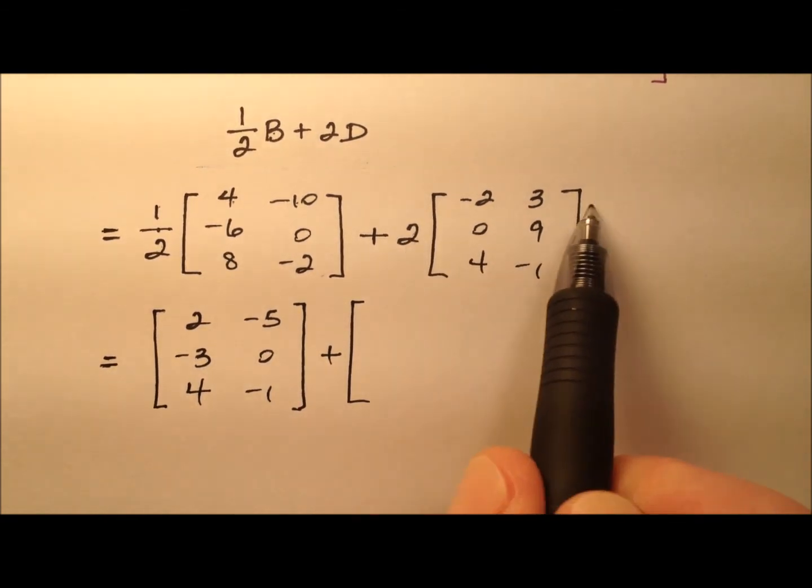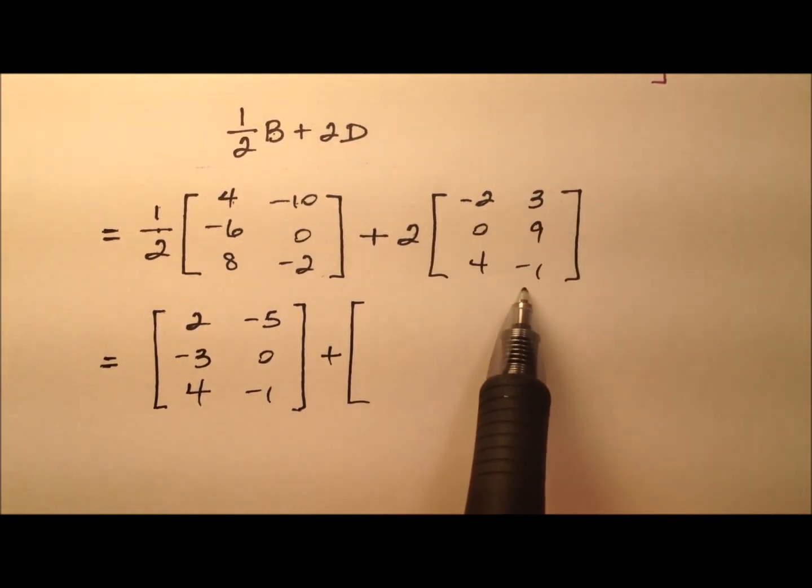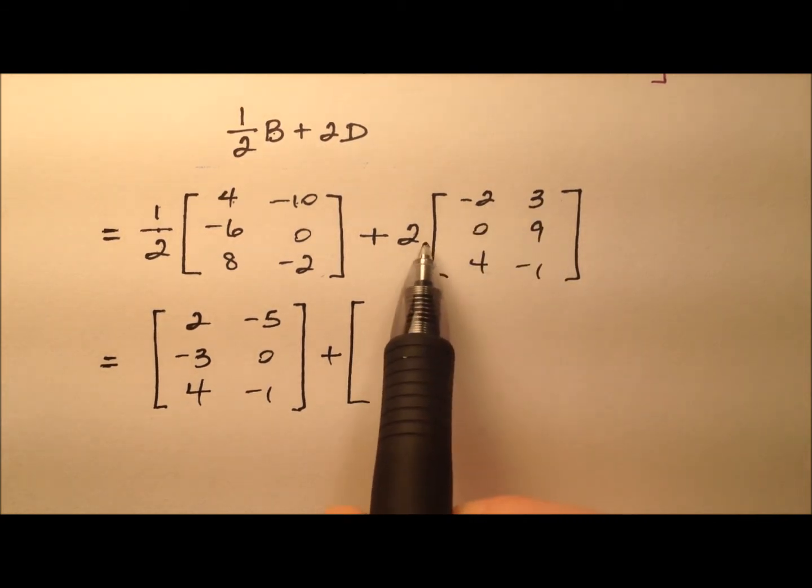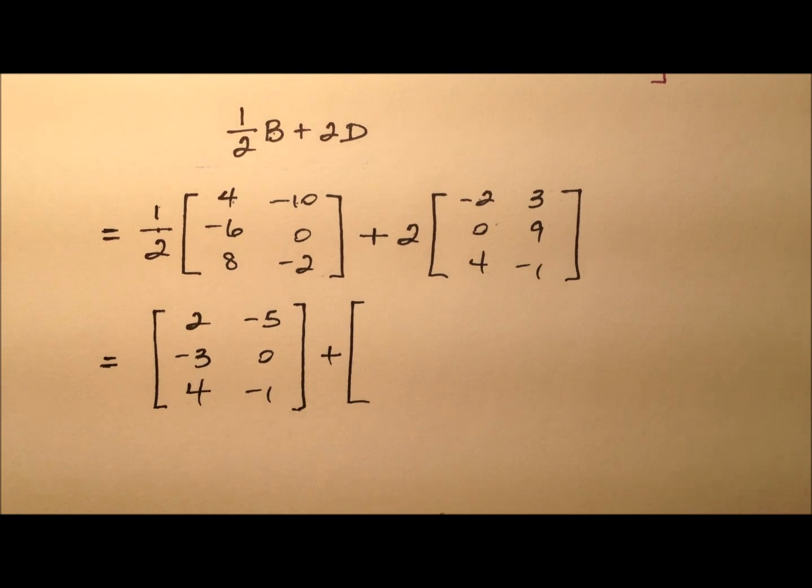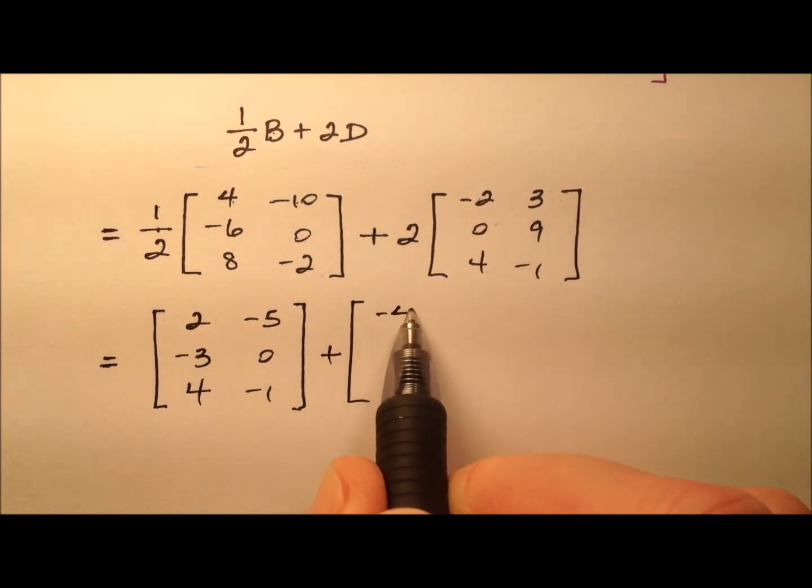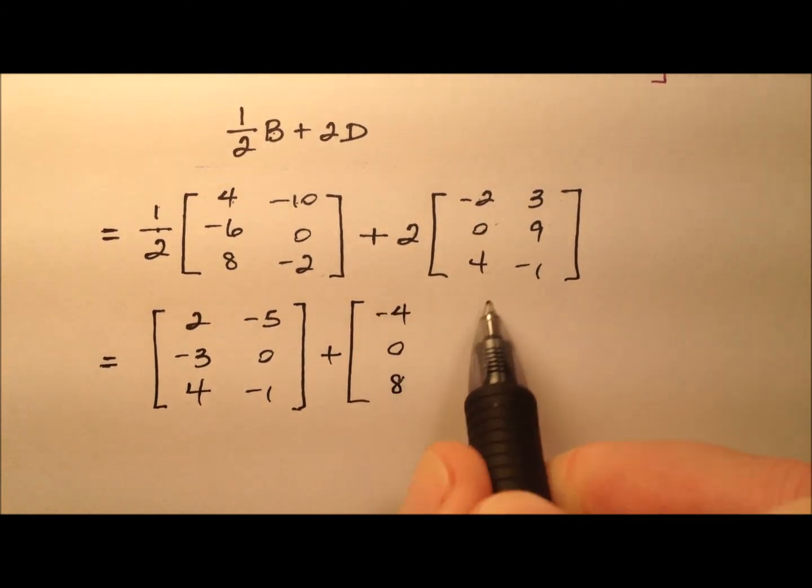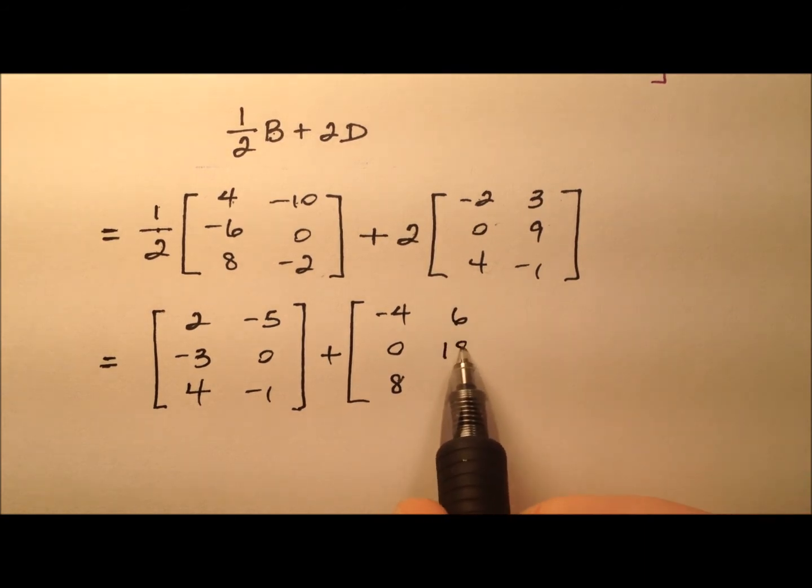So for the second scalar multiplication, it looks like we have matrix D with its 6 entries, and we're going to multiply each of those entries by 2, essentially just doubling them. So we'll end up with negative 4, and 0, and 8, looks like 6, 18, and negative 2.